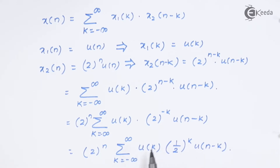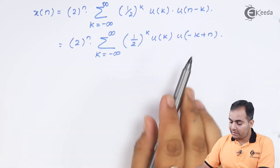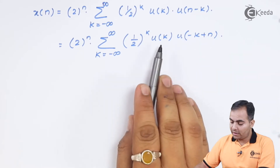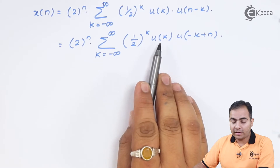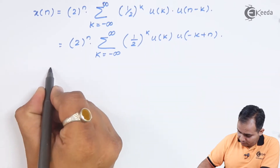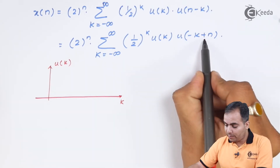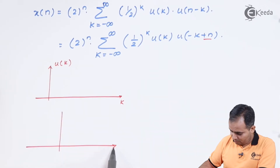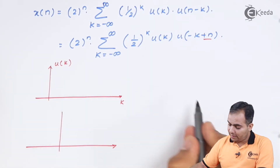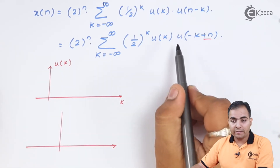Now I will multiply u(k) and u(-k+n) by plotting their graphs. First, I plot u(k), which starts at 0 with amplitude 1. Then I advance this graph by n (shift left by n), and finally take the mirror image of u(k+n) to obtain u(-k+n).